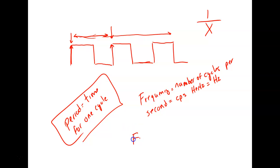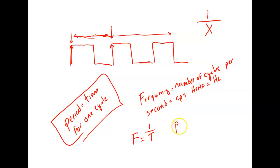If I can measure the period, I can take one over the time — which is the period — and that gives me the frequency. Or if I know the frequency, then the period would be one over the frequency. So they are inversely proportional.